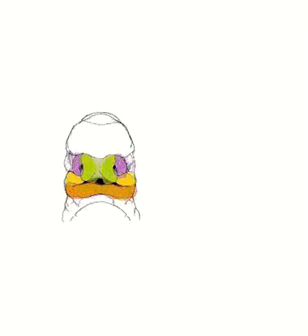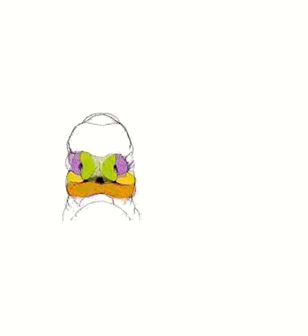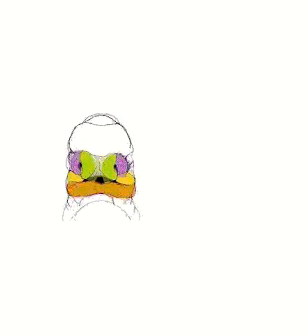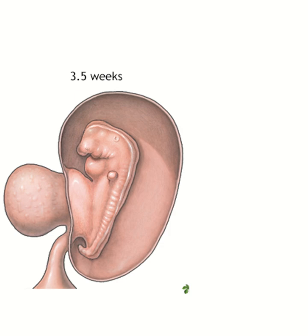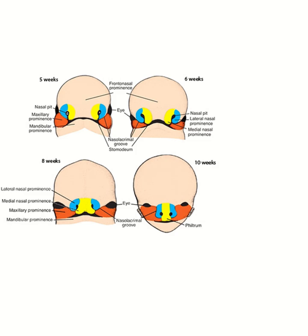The face begins to form around the third week of gestation with the development of pharyngeal arches and facial prominences. These structures give rise to the basic features of the face, creating the framework for the lacrimal apparatus. Within the third week, pharyngeal arches form in the embryo, setting the groundwork for facial development. Within four to five weeks, facial prominences are developed: the frontonasal prominence, maxillary prominence, and mandibular prominence.